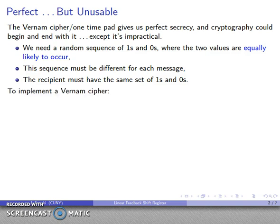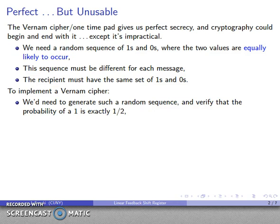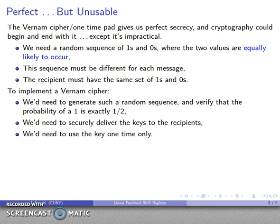So what this means is that if I want to implement a Vernam cipher, I need to generate a random sequence. And importantly, again, we need to make sure that our probabilities of a one and a zero are exactly one-half. Again, any deviation from this equal probability assumption is going to cause our cipher to be much weaker than we might hope it to be. We need to securely deliver the keys to everybody who's going to receive an encrypted message. And again, we need to use the key one-time only. That is the reason that this is called a one-time pad. And this is impractical for pretty much anything.